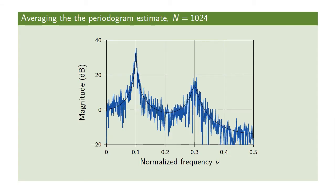We've seen that the periodogram estimate is not a very good estimate of the power spectral density due to the high variance at any particular frequency. We've also seen that we can reduce this variance by blocking the data and averaging over the blocks. Now it turns out that this is not the only way of averaging the data in order to get a more reliable estimate.